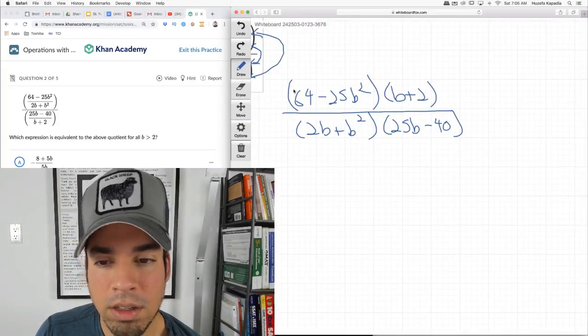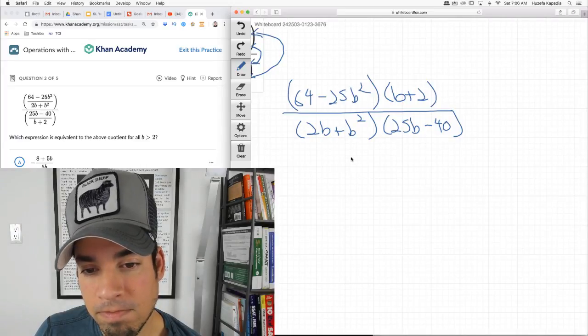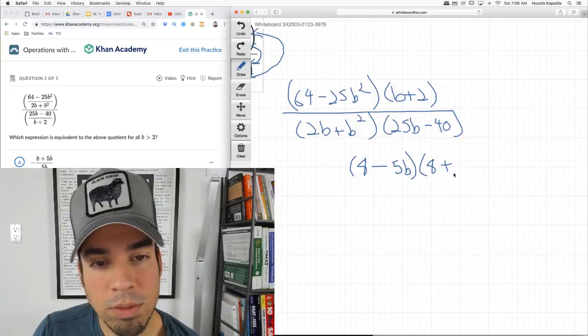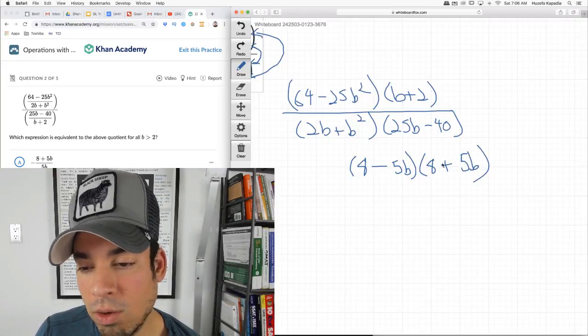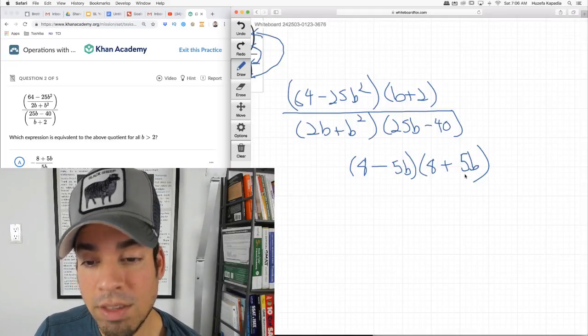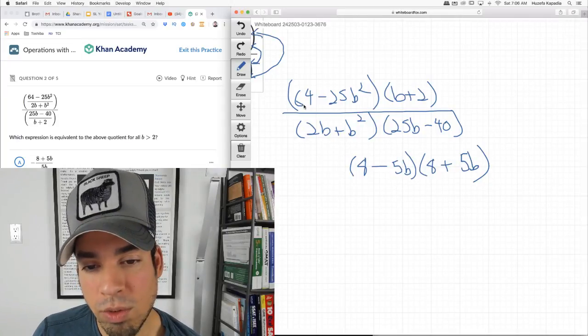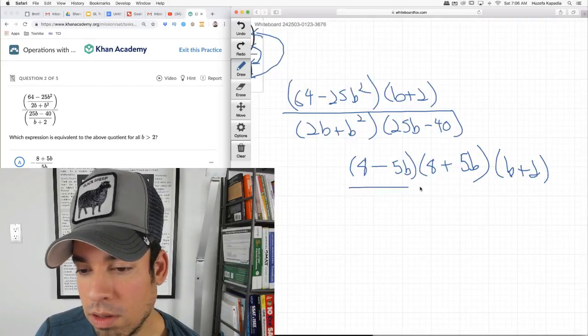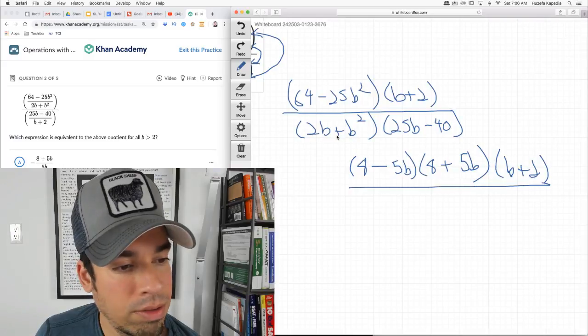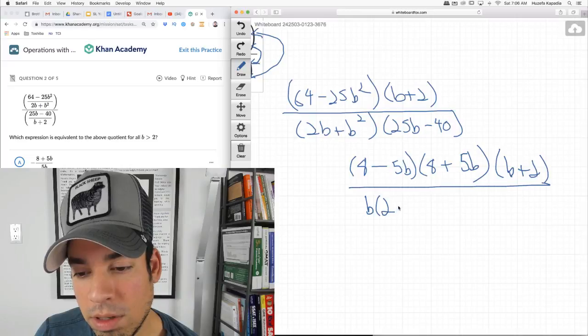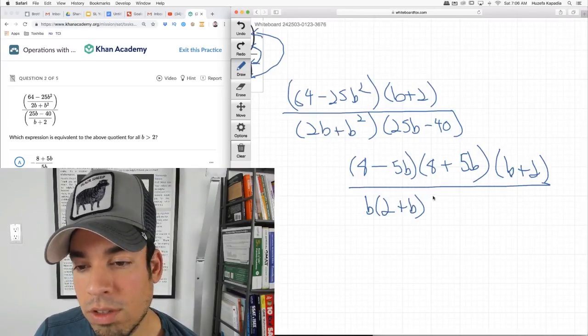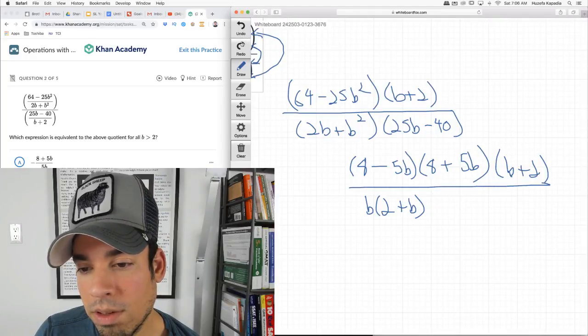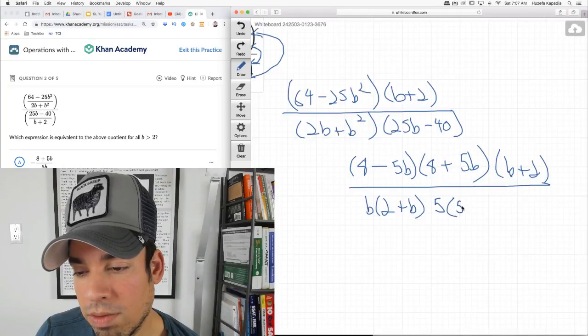I could rewrite this as 64 minus 25b squared times the bottom, which is b plus 2, over 2b plus b squared times 25b minus 40. Now we can factor. This one is a difference of squares. So this is 8 minus 5b times 8 plus 5b. This one we're going to factor out a b, so it's b times 2 plus b times, I can factor out a 5 from this, 5 times 5b minus 8.